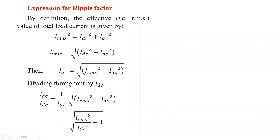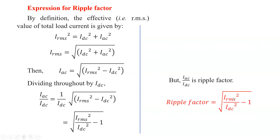This ratio I_ac / I_dc is itself called the ripple factor. Therefore, the expression for ripple factor is: γ = √(I_rms² / I_dc² − 1). This expression gives the ripple factor — that is, the AC component present in the output of the rectifier.